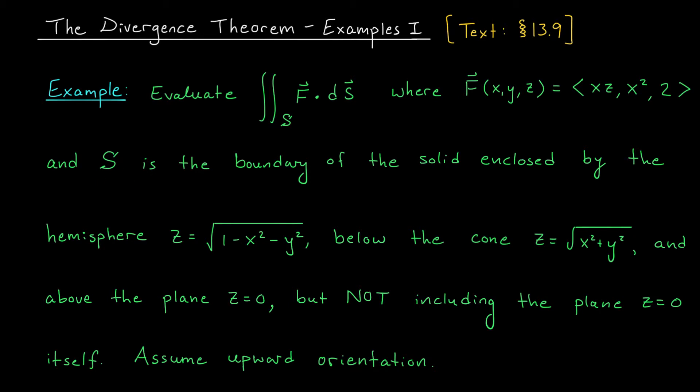S is the boundary of the solid enclosed by the hemisphere z equals the square root of 1 minus x² minus y², below the cone z equals the square root of x² plus y², and above the plane z equals 0.